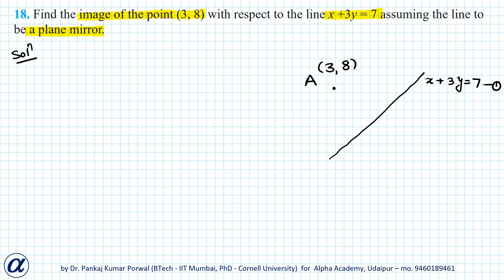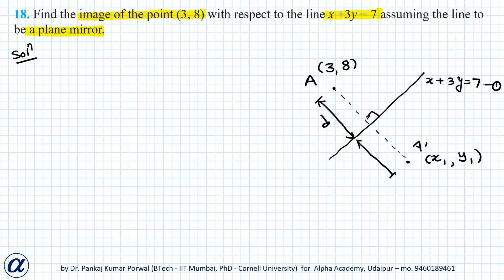The image of this point A will be on the other side of the line. Let's call it A' with coordinates (x₁, y₁). This image should satisfy certain conditions. First, the line connecting the point and its image should be perpendicular to the mirror. Second, the perpendicular distance of point A from the mirror should equal the perpendicular distance of the image from the mirror — that is, the midpoint of the point and its image should lie on the mirror, line 1.